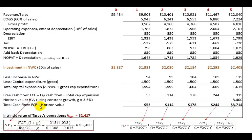The total cash flow in year 5 — including the horizon value of 3,400 — comes to 3,714. We find the value of the firm's operations by taking the present value of these total cash flows, discounting at the 13.08% weighted average cost of capital. This gives 2,417 as the value of the firm's operations.